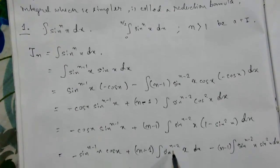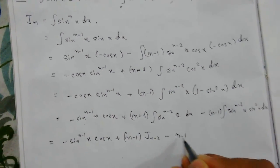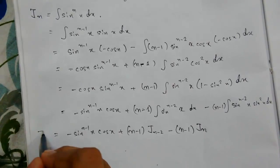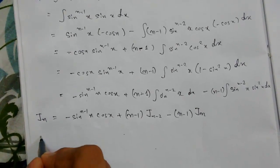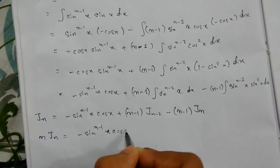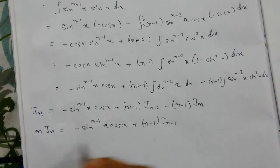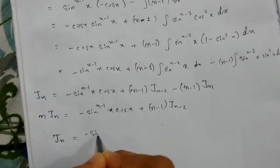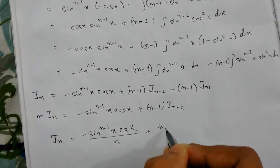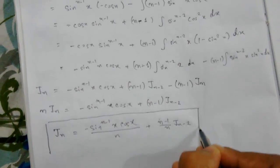We can write the integral of sin^(n-2)(x) dx as J_(n-2) and the integral of sin^n(x) dx as J_n. Rearranging, we get n·J_n = -sin^(n-1)(x)cos(x) + (n-1)·J_(n-2). Dividing by n, the reduction formula is: J_n = -sin^(n-1)(x)cos(x)/n + ((n-1)/n)·J_(n-2).